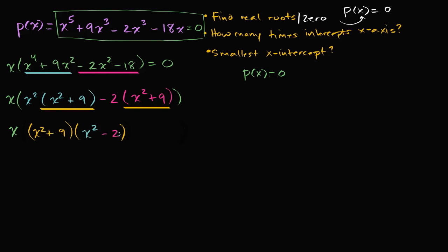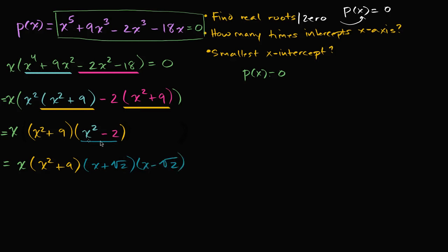The term x squared minus two can be viewed as a difference of squares if you view two as the square root of two, squared. So we can rewrite the full factored form as x times x squared plus nine times x plus the square root of two times x minus the square root of two, all equal to zero. I'm just recognizing that last part as a difference of squares.